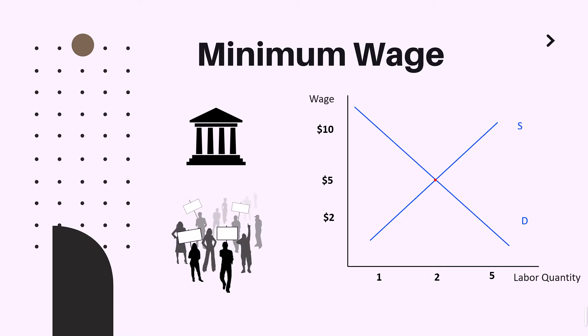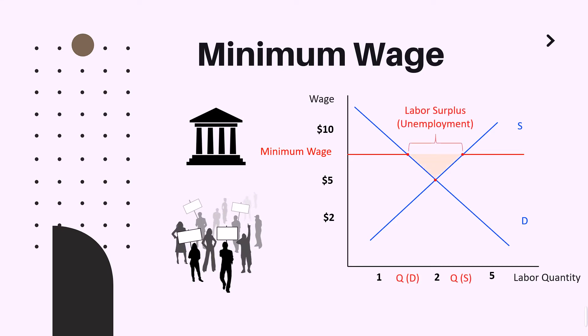Here is our labor market — we have labor quantity and wage instead of prices. Let's say that five dollars is the equilibrium wage for this particular market. Now all of a sudden the government imposes a minimum wage which has a binding effect. What we will have in this situation: with this higher wage, more suppliers — or laborers in this case — will be ready to work, yet companies will not be able to afford so many employees at the higher wage. What we will have is a labor surplus, which translates into unemployment.